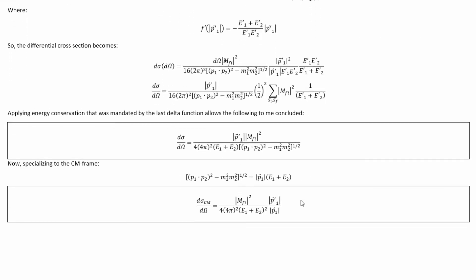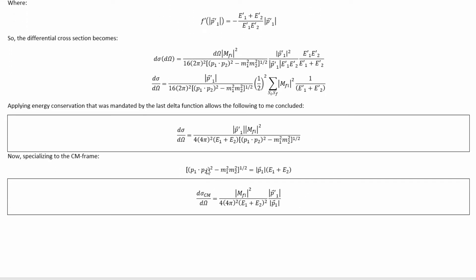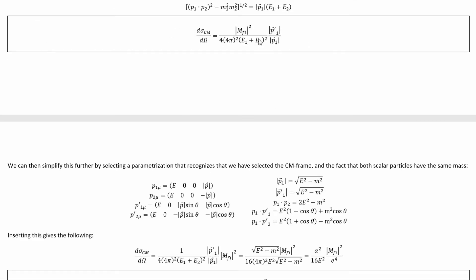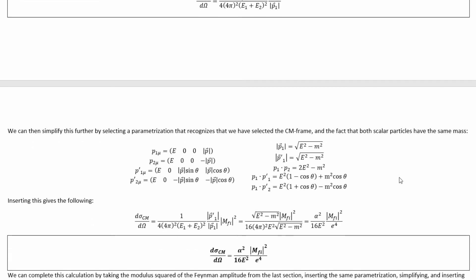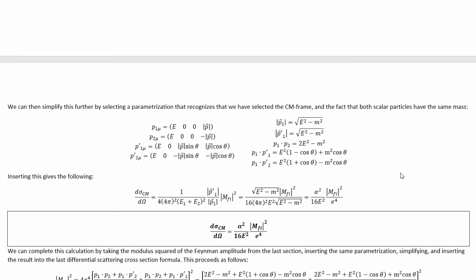At the end of all those integration calculations, what we get for the differential scattering cross-section with respect to the solid angle — with all other variables integrated out — is this. We can then transition to the center of mass (CM) frame, which allows us to simplify the formula even further, getting us to this. We can simplify further by selecting a standard parameterization that recognizes the CM frame and the fact that both scalar particles have the same mass — this is the same parameterization used for the standard QED Møller formula, which I've derived in a separate video linked in the description.